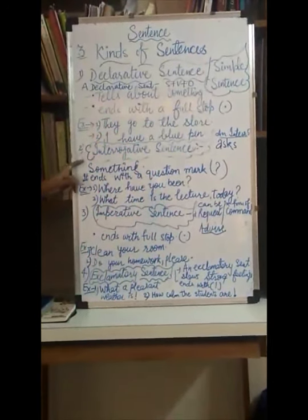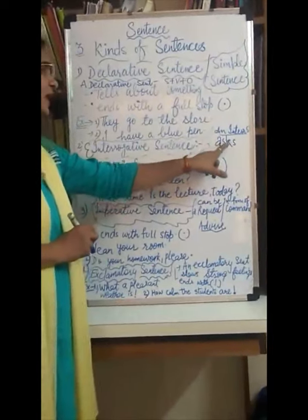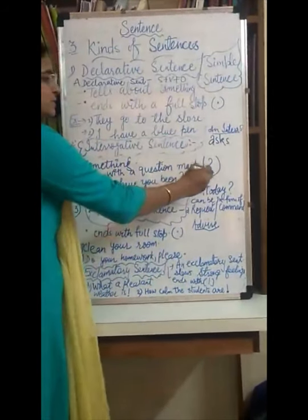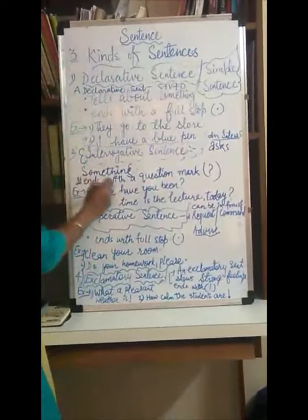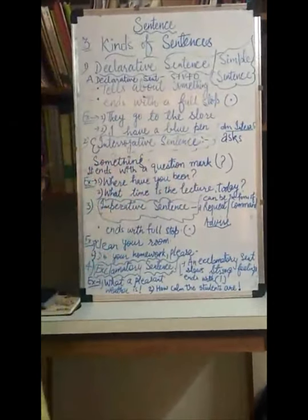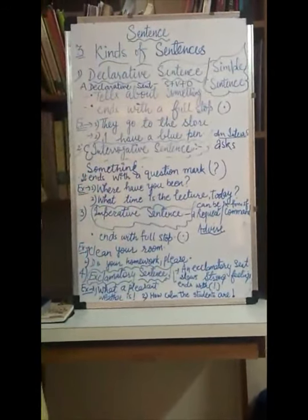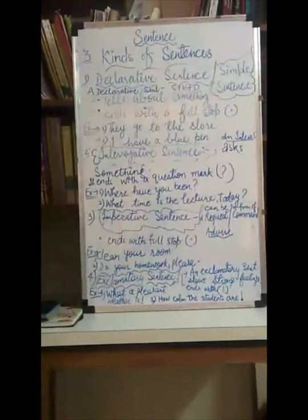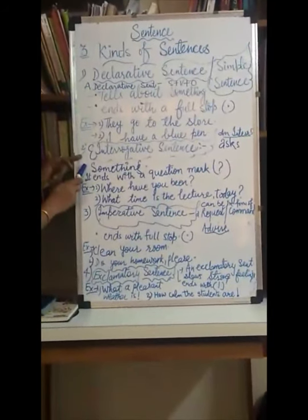Now we move on to the second kind: the interrogative sentence. An interrogative sentence asks something and ends with a question mark. It is very essential to include the question mark; otherwise it will look like a declarative sentence. For example, 'where have you been?' and 'what time is the lecture today?' — both are examples of interrogative sentences. I hope these two kinds — declarative and interrogative — are clear.